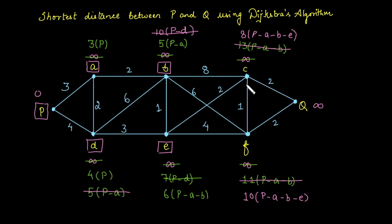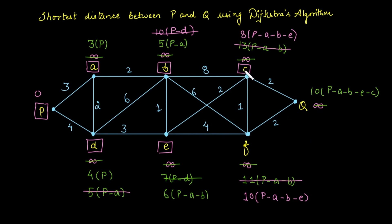Out of the remaining vertices, the minimum cost is at vertex C, so we log vertex C next. From C we can visit vertex Q or F. Visiting Q, the total cost is 8 plus 2, that is 10, via path P→A→B→E→C. Keep the minimum of 10. We can also move to F: cost is 8 plus 1, that is 9, via path P→A→B→E→C. The minimum for F is 9, so we discard the previous cost of 10 and update F to 9.